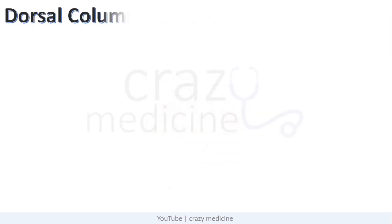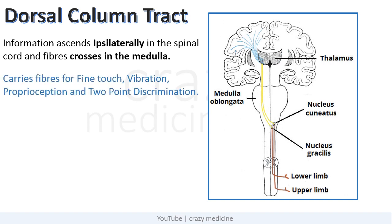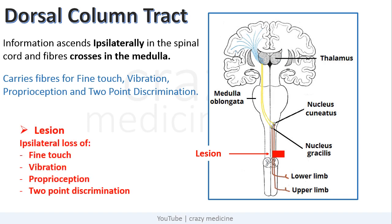First is the dorsal column tract. Information ascends ipsilateral in the spinal cord and fibres cross in the medulla. It carries fibres for fine touch, vibration, proprioception, and two-point discrimination. So its lesion, as depicted in the slide, will cause ipsilateral loss of fine touch, vibration, proprioception, and two-point discrimination.